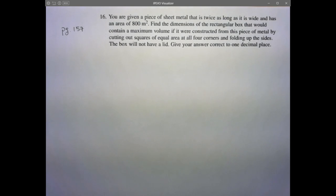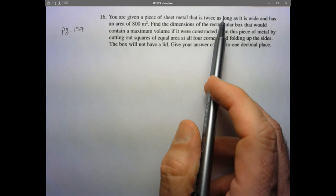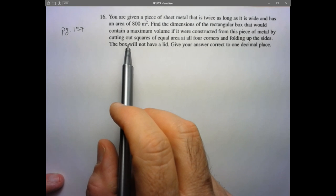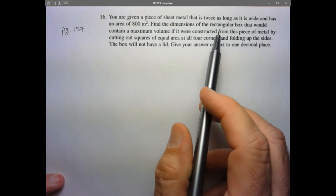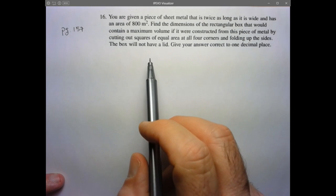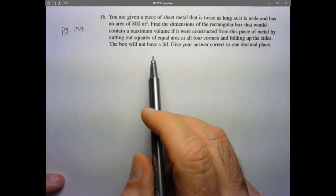Hi folks, we're going to take a look at page 157, number 16. Here they tell us that they give us a sheet of metal that's twice as long as it is wide and has an area of 800 meters squared. They want us to find the dimensions of the rectangular box that would contain a maximum volume if it was constructed by cutting out squares of equal area on all four corners.